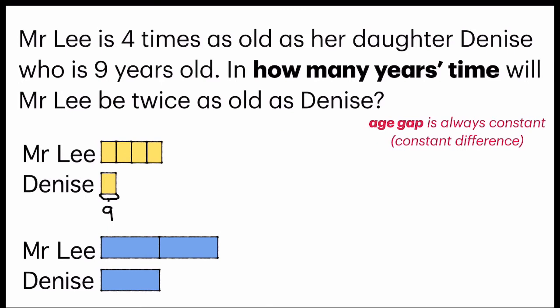Another way of tackling this question would be finding Mr. Lee's age. So Mr. Lee's age, since he's 4 times as old, he will be 9 times 4, which is 36.